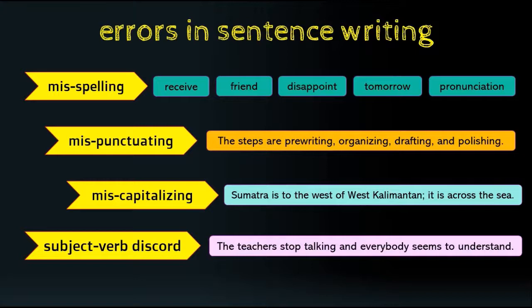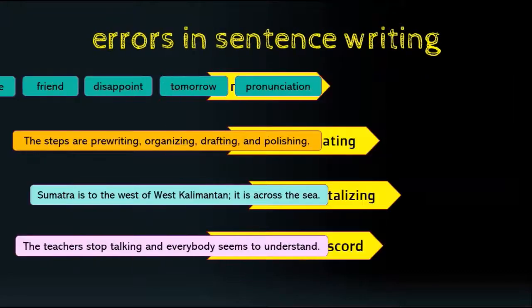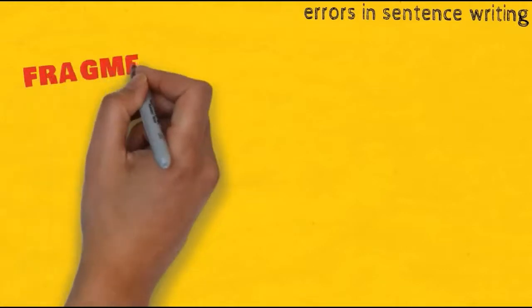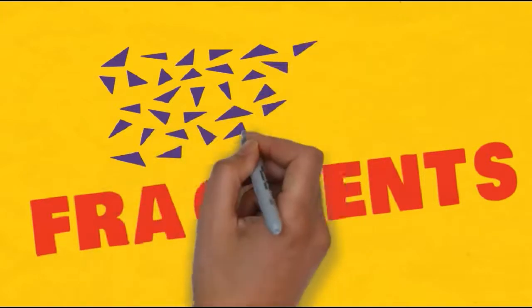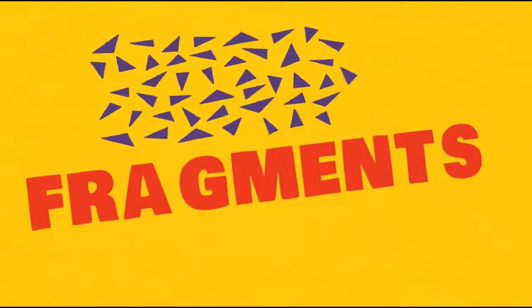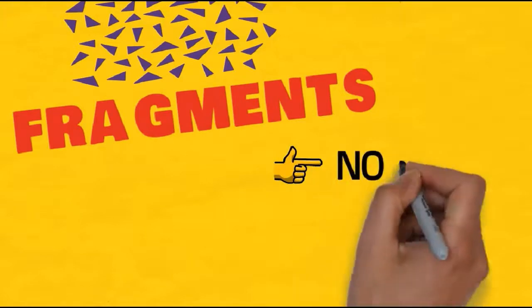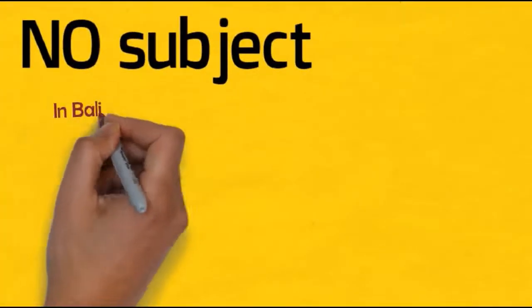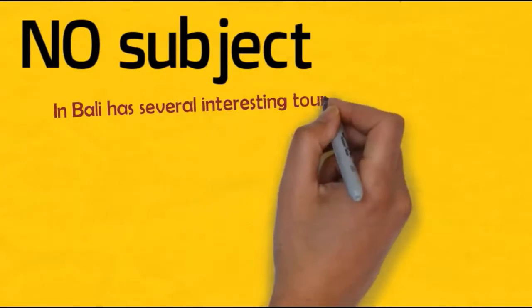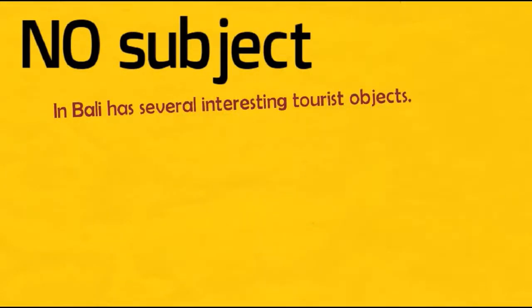Now we are going to see the last three most common errors in writing, which are usually done unconsciously by writers. The fifth error is fragment. A fragment is a missing important part in a sentence. The first type is missing the subject — this usually happens when the sentence starts with an adverb or prepositional phrase. The writer wrongly thinks the subject is 'in Bali' while in fact the sentence has no subject.